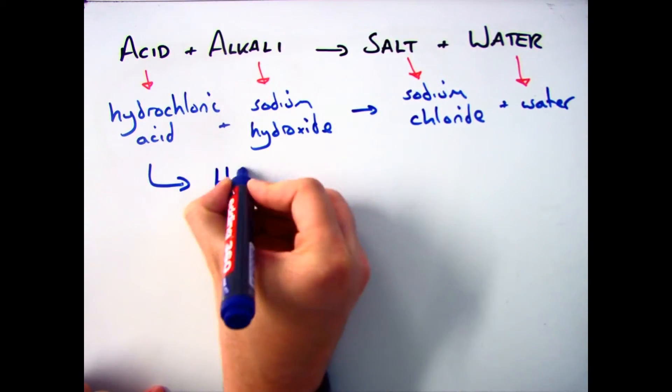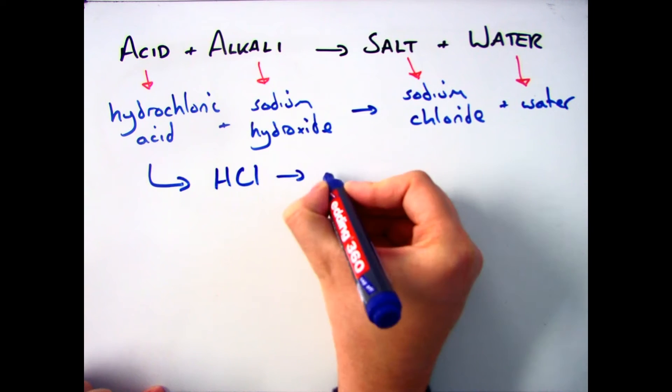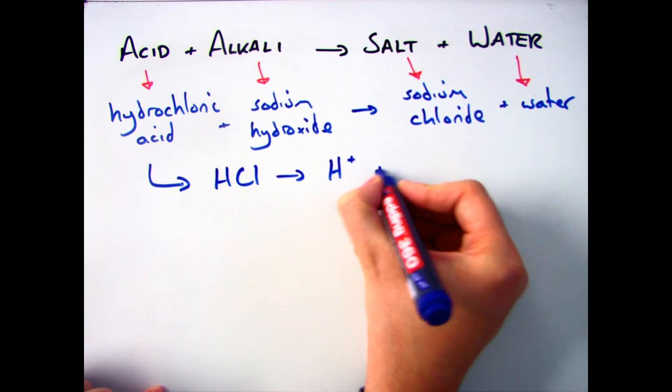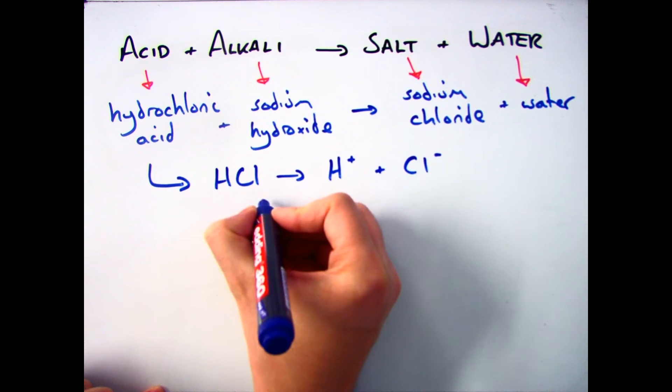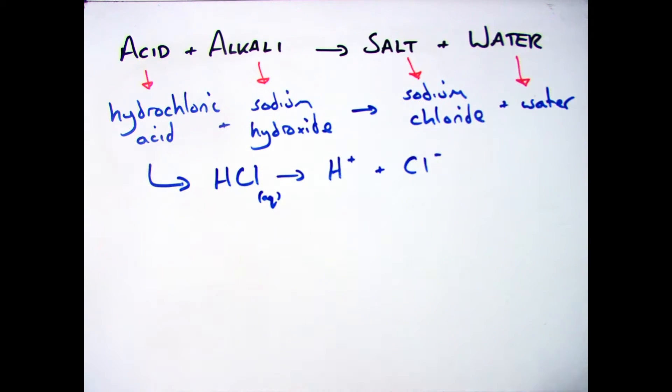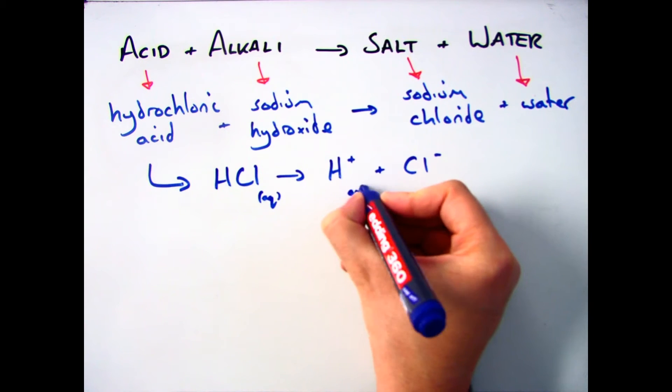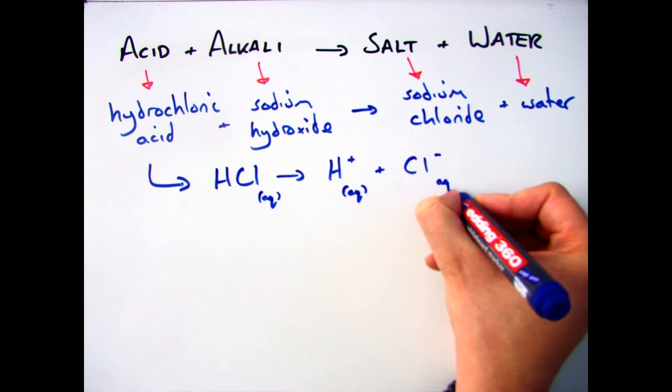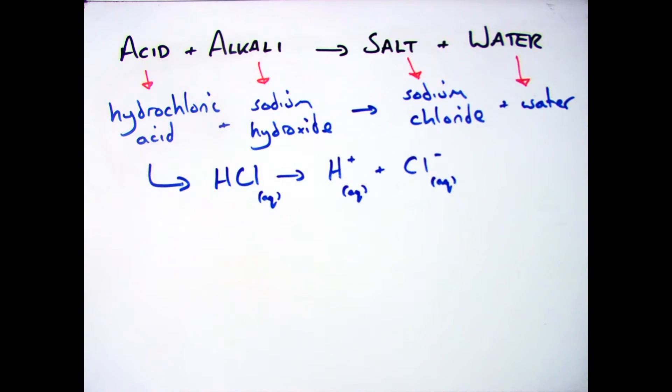If we start off with looking at the acid then. Hydrochloric acid, you should know the formula is HCl, is made up of your H plus and your Cl minus ions. It is aqueous, which means that as soon as you put them into solution, they dissociate. Hydrochloric acid, the thing that makes it an acid, is your H plus ions when it's in solution.